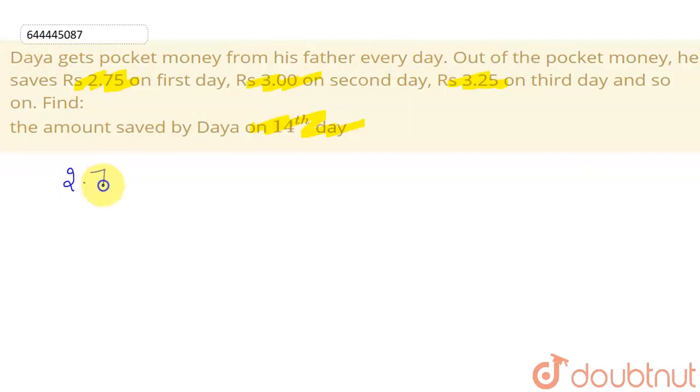If we see this data - he saved 2.75 on first day, 3 on second day, 3.25 on third day and so on. If we take a close look, this is forming an AP. 3 minus 2.75 is equal to 3.25 minus 3.